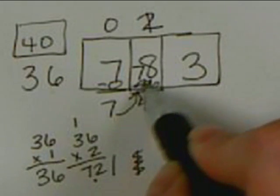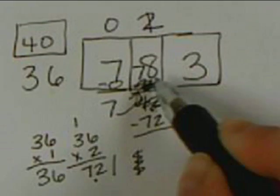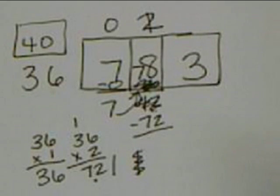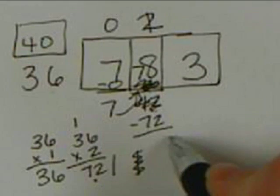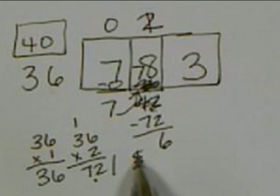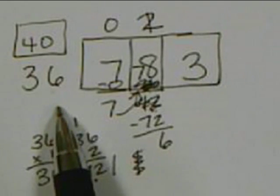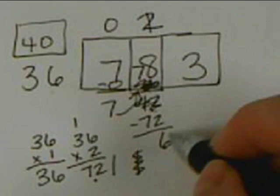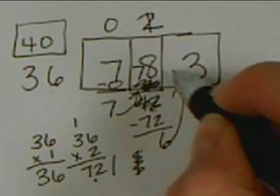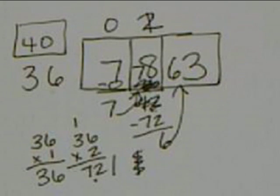Now we change it out and do 78 minus 72, which is 6. This time we know we've gotten it right because 6 is less than 36, so we can move to the next box.